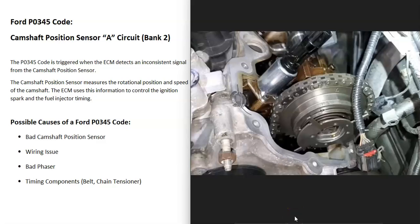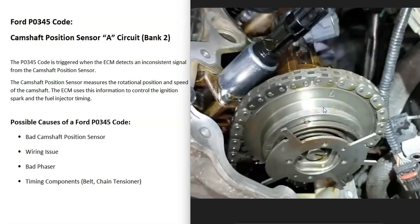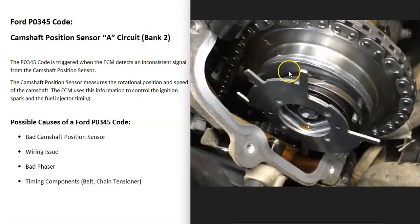A very common problem with some Ford engines, for example the 5.4 liter Triton engines, is a bad phaser. These phasers are located right in front of the timing chain and they have little notches that spin — for example, one, two, three, four, five notches. These are spinning, and this middle notch is supposed to be lining up with the indicator right here. If it's not lining up correctly, it means the phaser has gone bad and needs to be replaced. The camshaft position sensor is located right here and is being activated by every fifth tooth as the phaser spins.